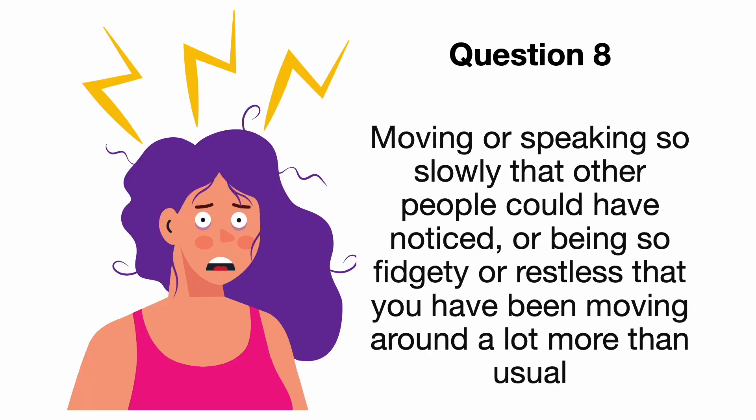Question 8 involves feeling restless or moving more slowly than usual. This question looks for psychomotor changes, which can manifest as psychomotor retardation — defined as slowed speech, movement, or thought process — or psychomotor agitation, which involves restlessness, fidgeting, or an inability to sit still. Both are physical manifestations of depression that others may notice.